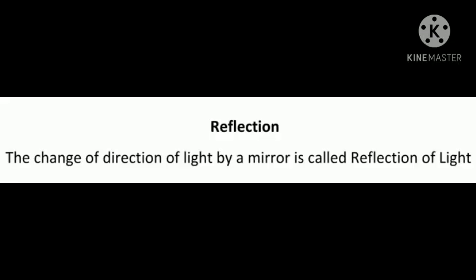Now one question arises: can we change the path of light? What happens when light falls on a polished or a shiny surface? One way to change the direction of light is to let it fall on a shiny surface. For example, a shining stainless steel plate or a steel spoon can change the direction of light. The surface of water can also act like a mirror and change the path of light. A mirror bounces off light from its surface, and this bouncing off of light from a surface is known as reflection of light. By turning the mirror, we can reflect light in different directions.